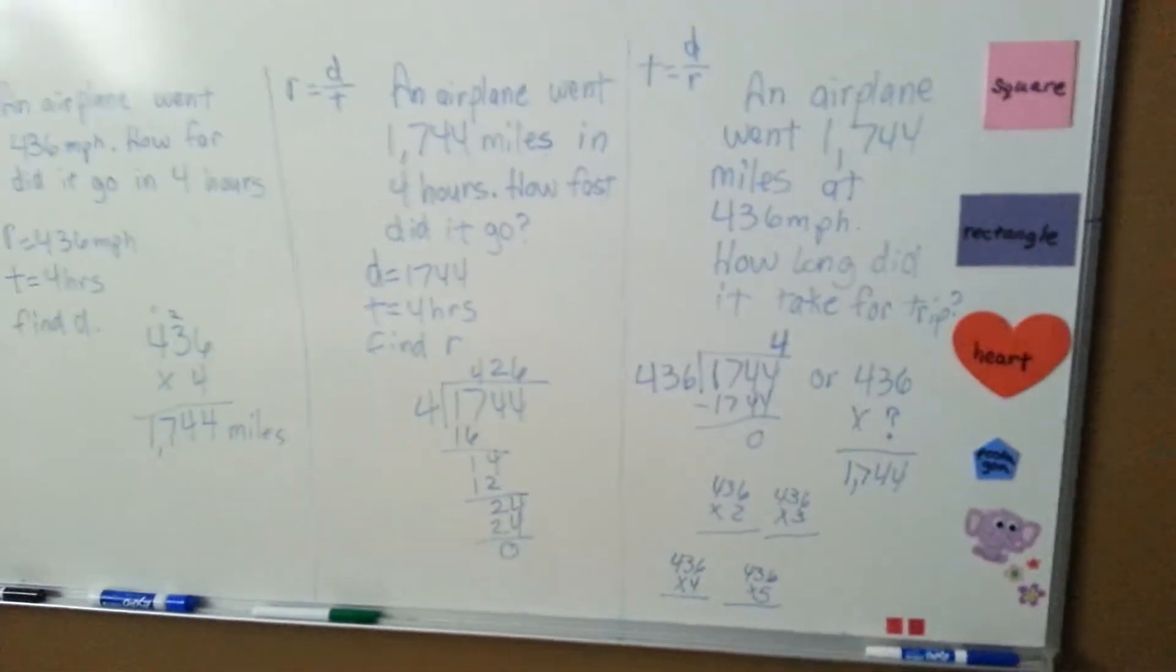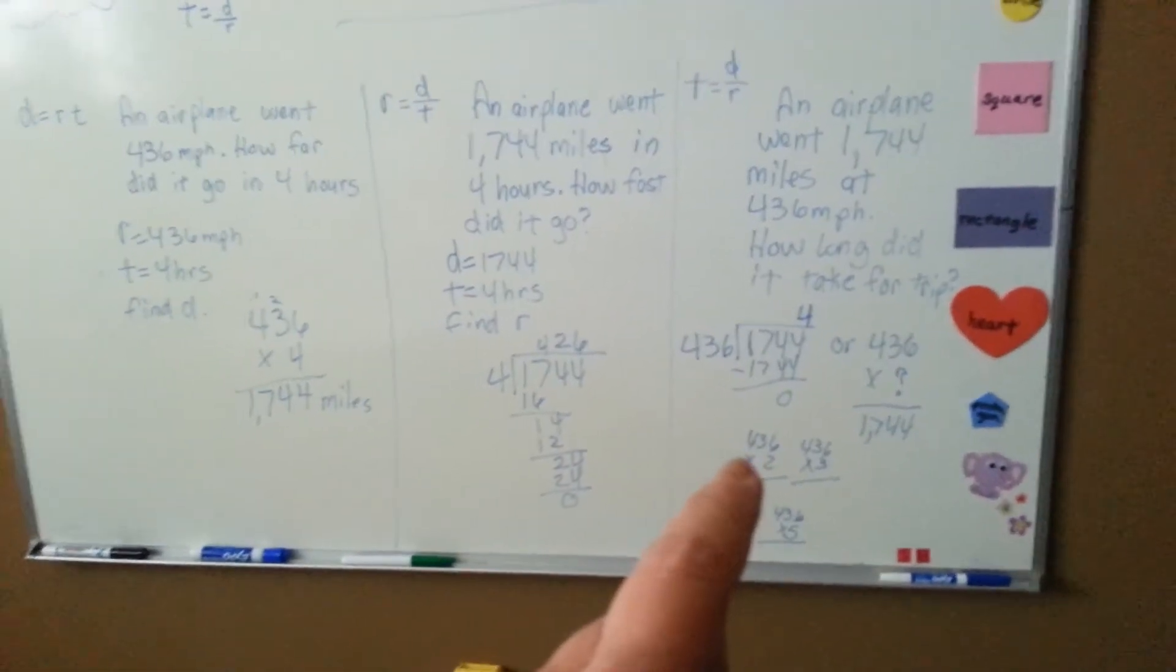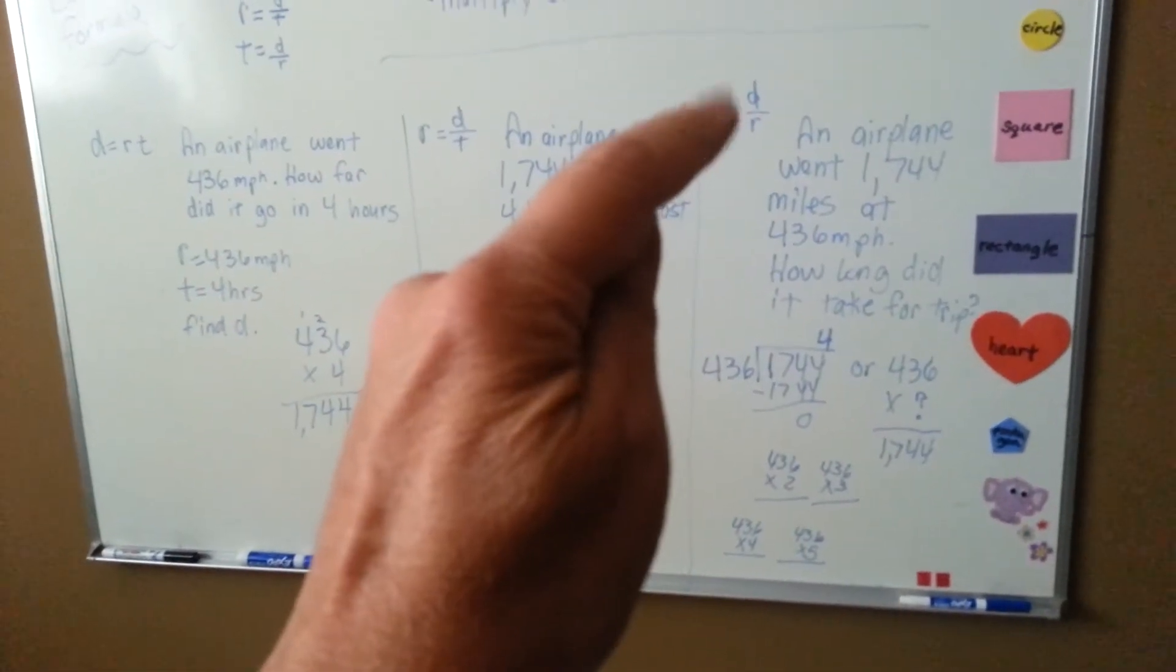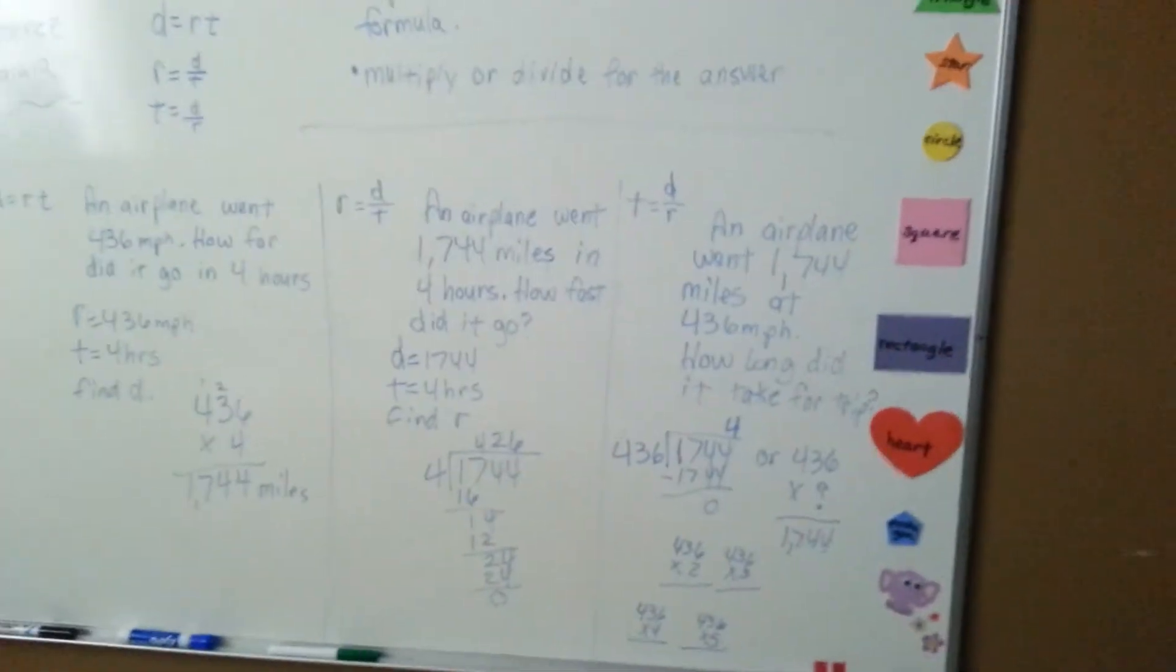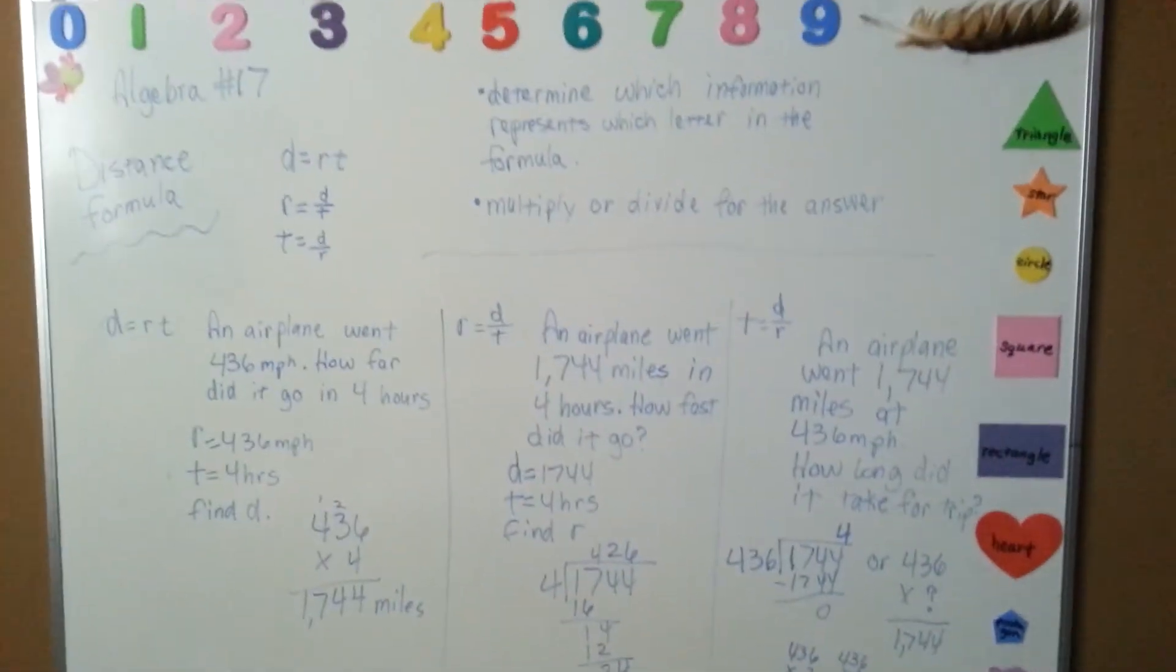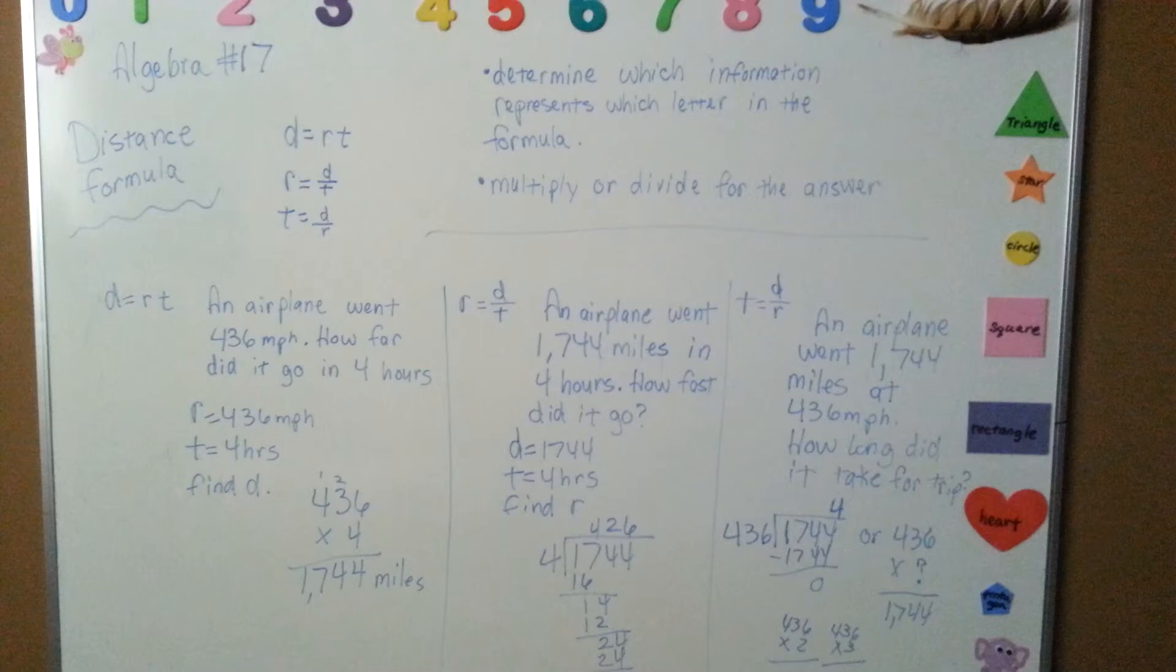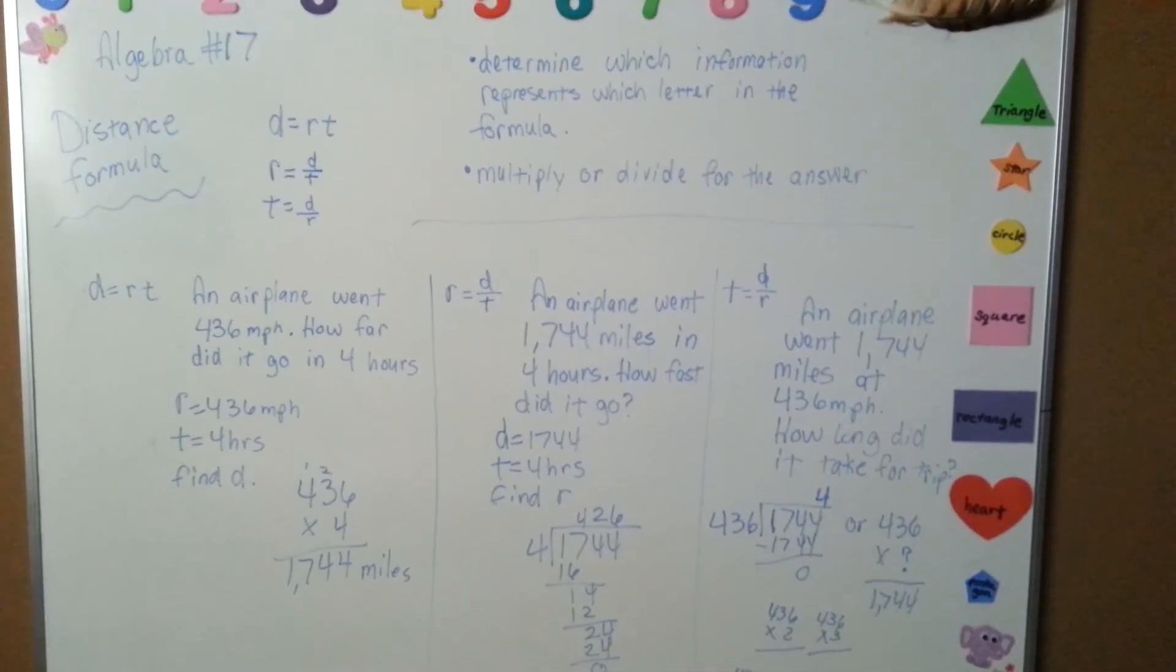And then multiply it by 4 to absolutely make sure you're right. And then the answer would be 4. That is the way I would prefer to do it, even though it's given to you as if it would be a division problem. That is distance formula d equals rt.